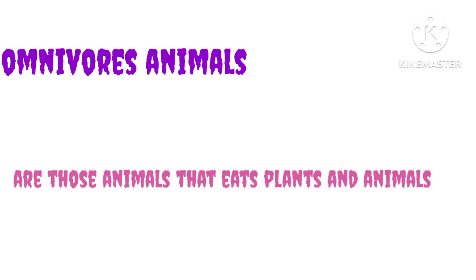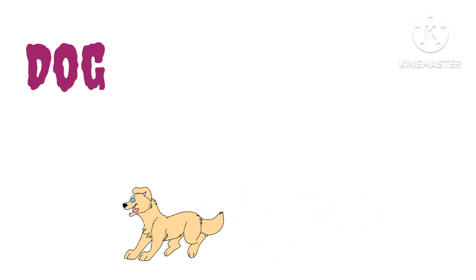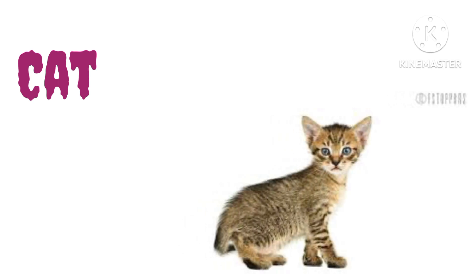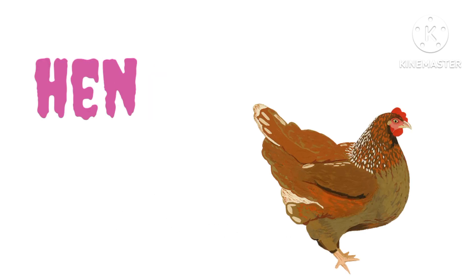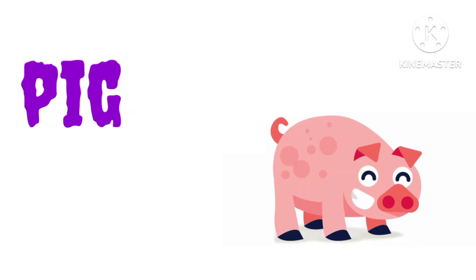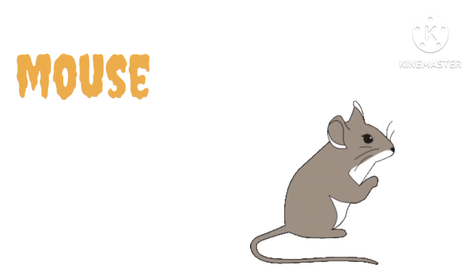Let's start with omnivorous animals. These are animals that eat both plants and meat. Dog — D-O-G — dog means kutta. Cat — C-A-T — cat means billi. Bear — B-E-A-R — bear means baloo. Crow — C-R-O-W — crow means kawa. Hen — H-E-N — hen means murgi. Pig — P-I-G — pig means soor. Mouse — M-O-U-S-E — mouse means chooha.